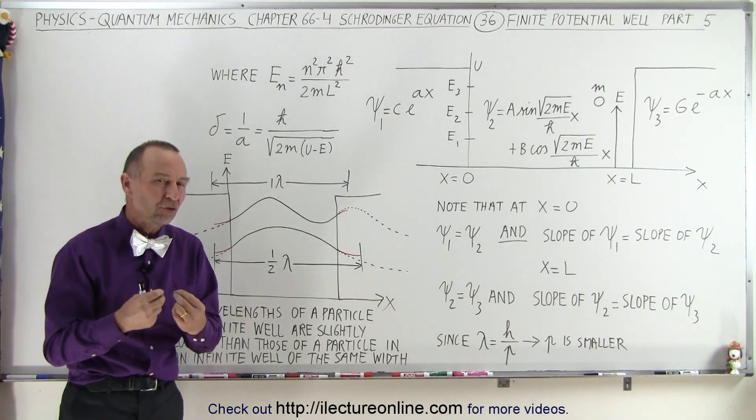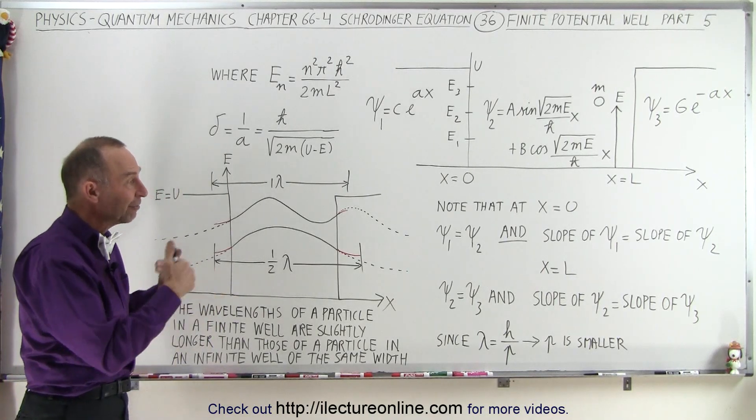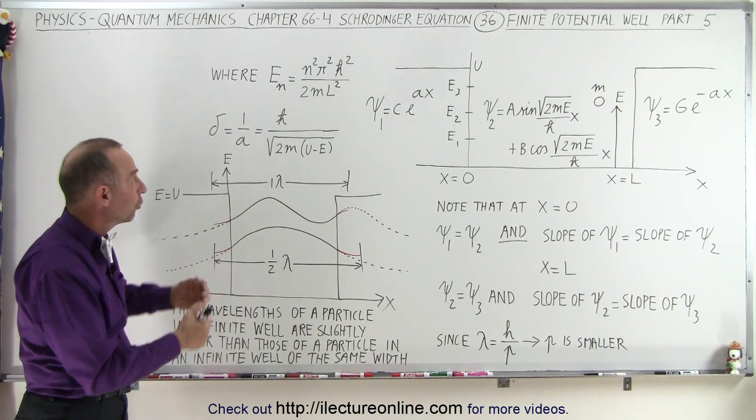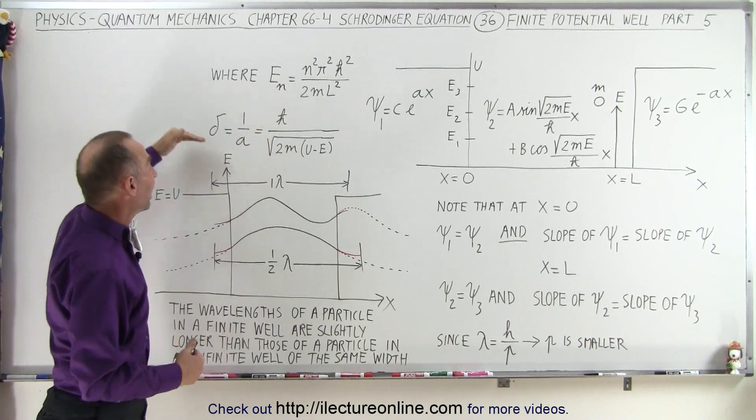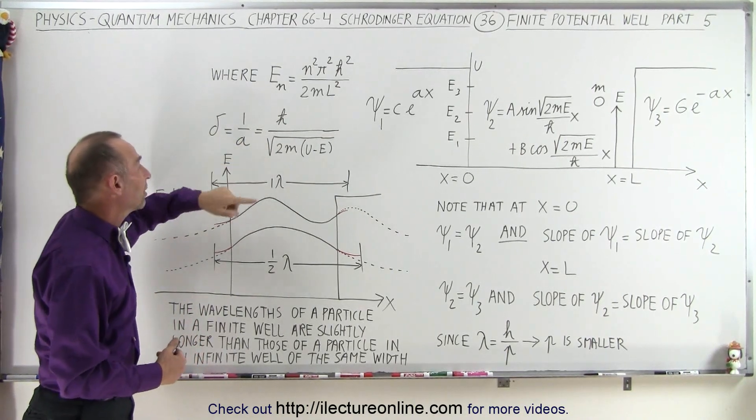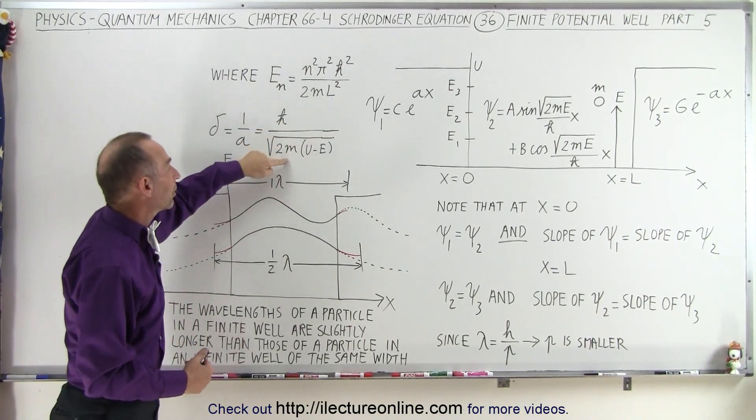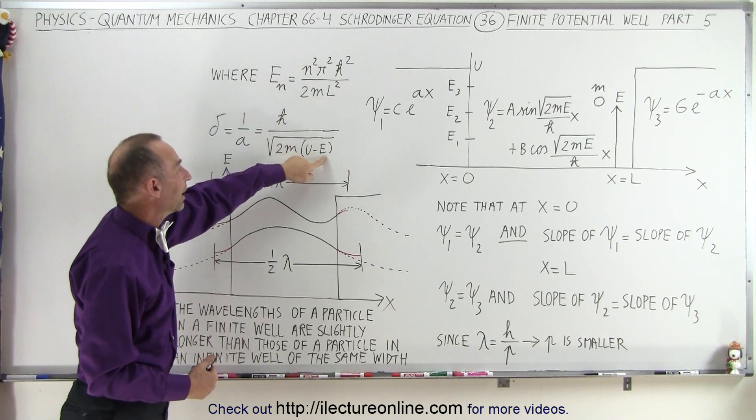So those are some of the key constraints of a particle inside a finite well, and if you follow those, you can see that we have specific values for E sub n for the various energy levels and specific values for the penetration depth depending upon the mass of the particle and the value of the energy of the particle.